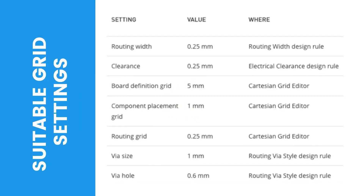Suitable grid settings: for a design such as this simple tutorial circuit, practical grid and design rule settings should be like this, as shown in this table. While it might be tempting to select a very fine routing grid so that routing can effectively be placed anywhere, this is not a good approach. The point of setting the grid to be equal to or a fraction of the track plus clearance is to ensure that the tracks are placed so that they do not waste potential routing space, which can happen if a very fine grid is used.